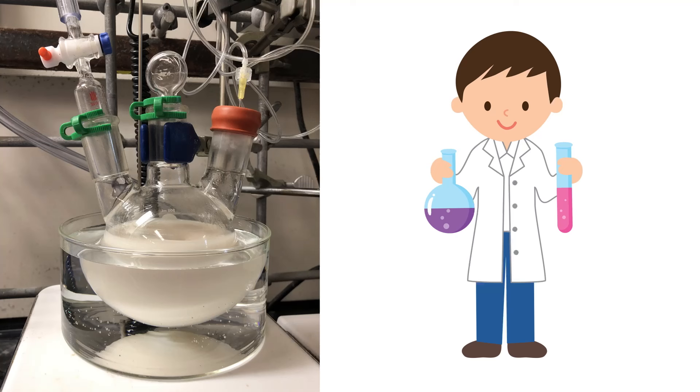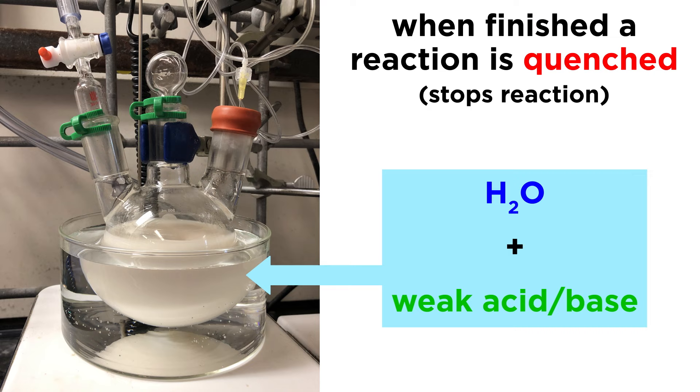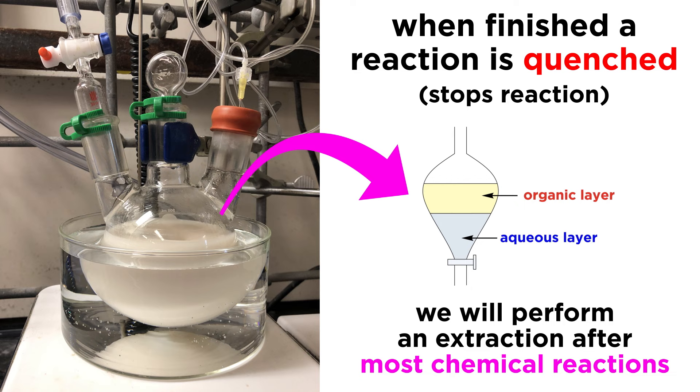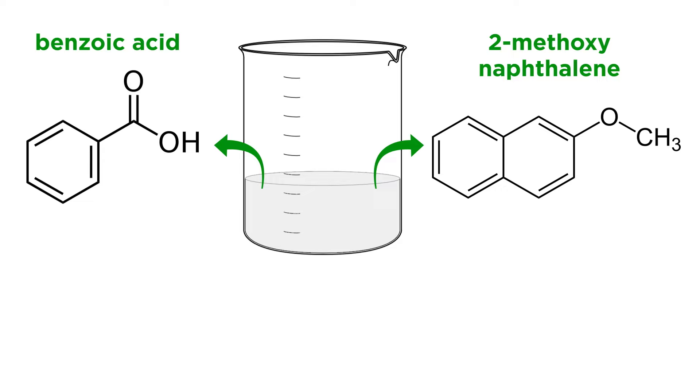So let's say this is a reaction mixture that we just got from performing a chemical reaction in some organic solvent. Most of the time, you'll need to quench a reaction once it's finished by adding water. This means to stop a reaction mixture from reacting further, often with dilute weak acid or base, to neutralize any ionic species. This means that after any chemical reaction, you will need to perform an extraction to separate your organic compounds from whatever is in the aqueous layer. In this particular case, rather than a reaction mixture, we simply have a mixture containing benzoic acid and 2-methoxynaphthalene dissolved in diethyl ether, and our goal is to obtain each of these two compounds in a pure form.